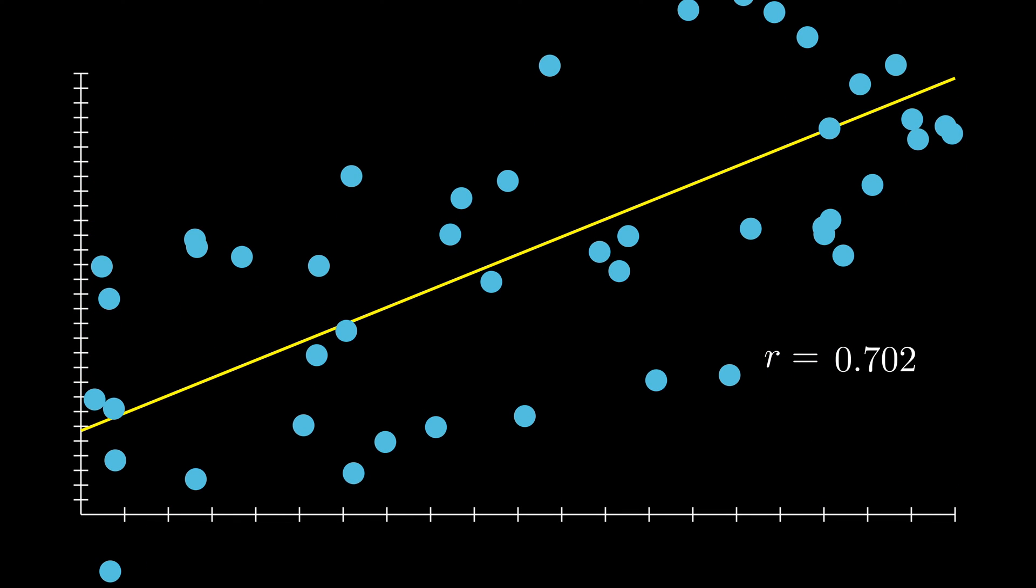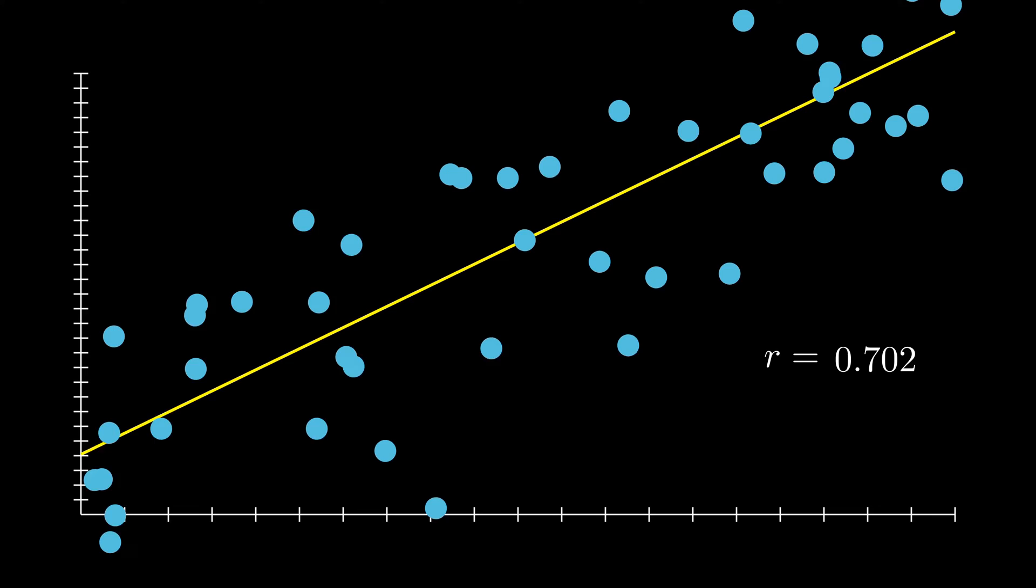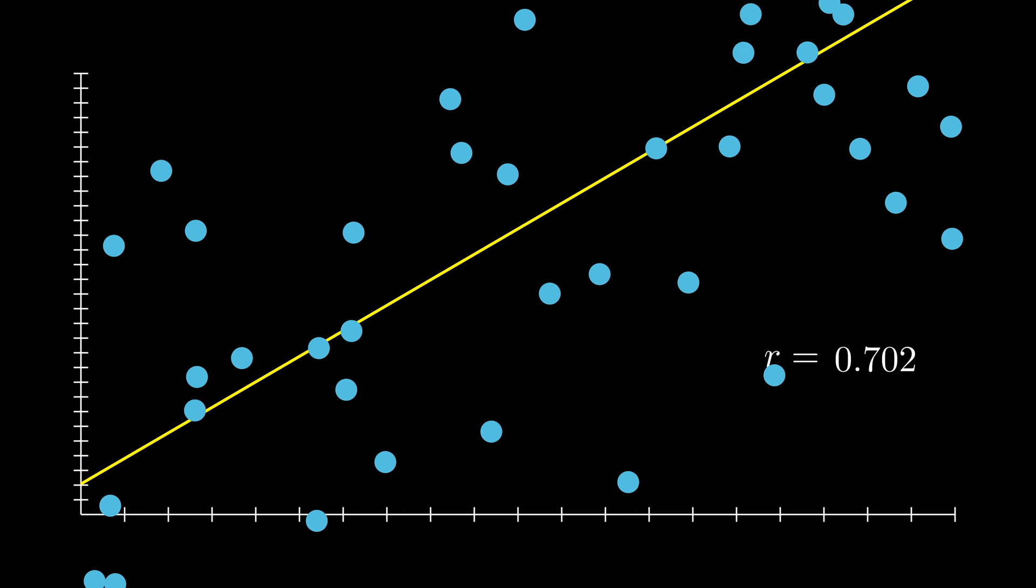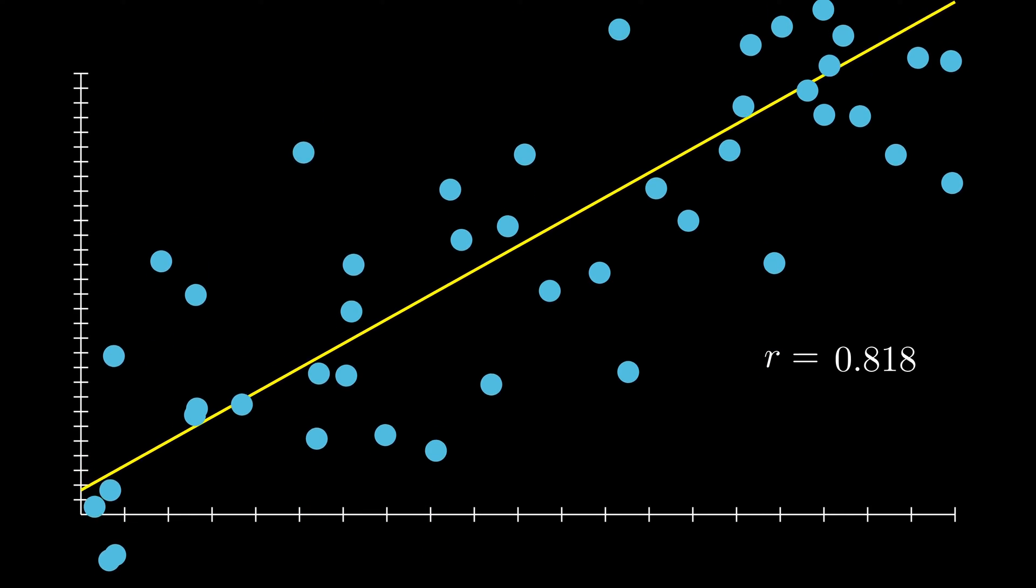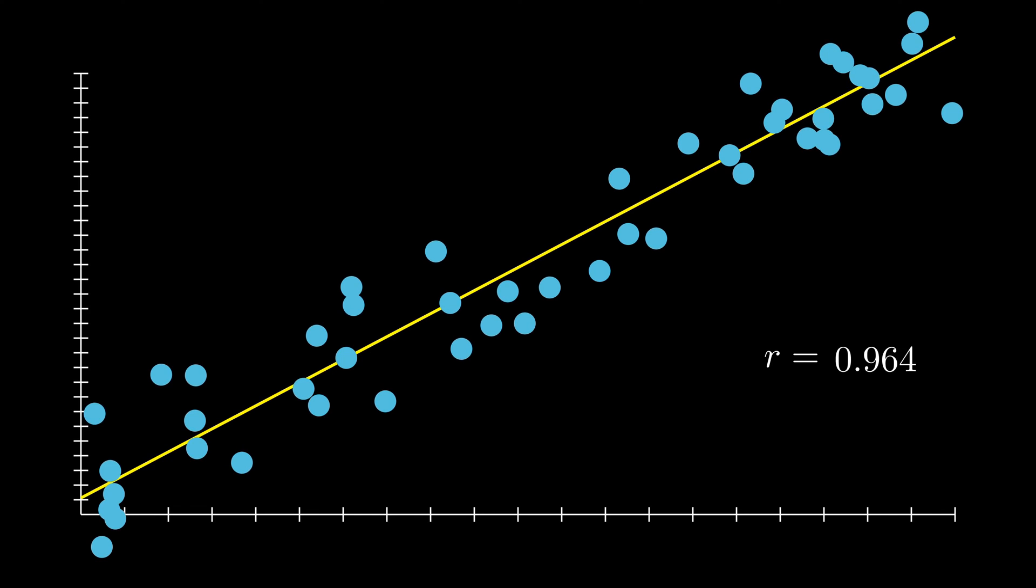The correlation coefficient, also called the Pearson correlation, is denoted by r. It measures the strength of a relationship between two variables as a value between negative 1 and 1.